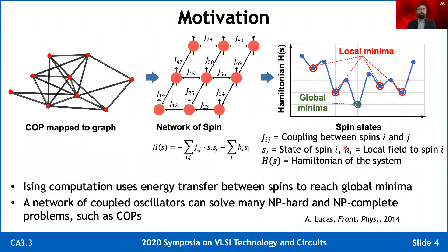An interesting way to solve combinatorial optimization problems is to map them to a graph, then use some embedding algorithm to map the graph to a spin network. Here, J represents the coupling strength between two spins and H represents the local bias or local field. This equation determines the Ising Hamiltonian, which is the energy of the system. The network uses the coupling dynamics to find the lowest energy state at the global minima. The spin states at global minima is the solution to the mapped problem. Many NP-hard and NP-complete problems can be solved using the Ising model, and finding a decent local minima is good enough for many of these problems.